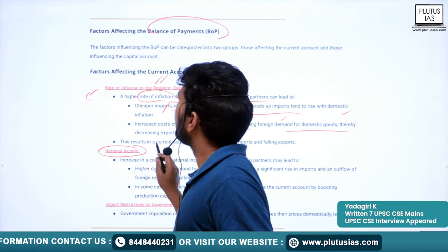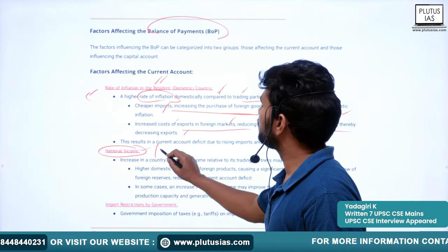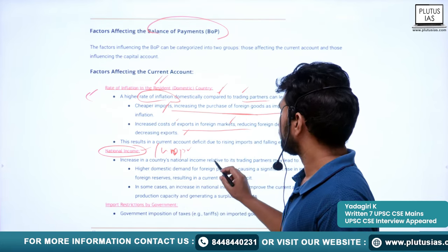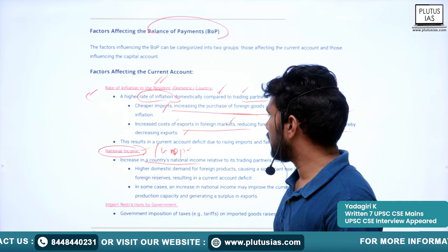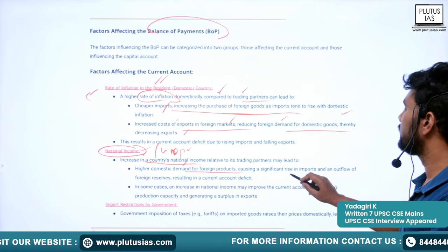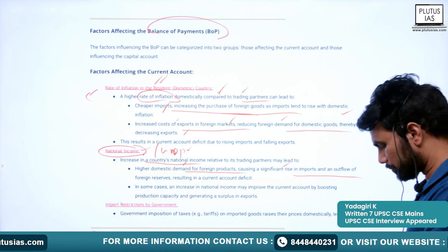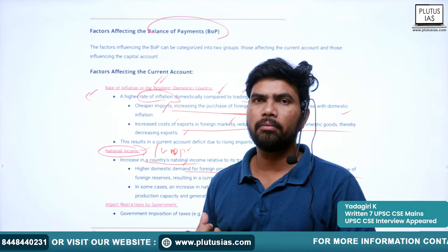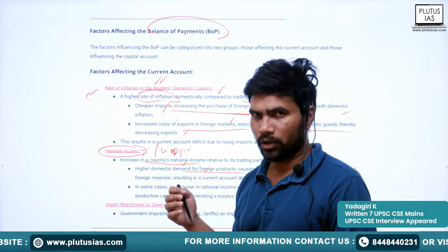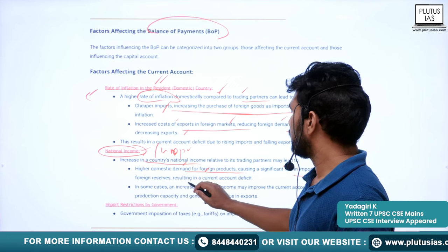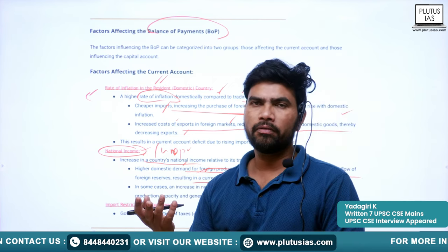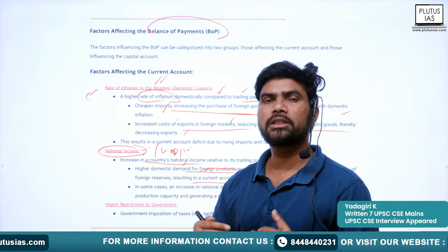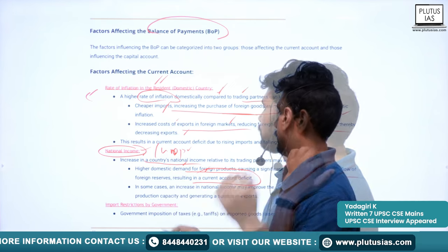Another factor impacting the current account is national income or GDP. An increase in a country's national income leads to higher domestic demand for foreign products, causing a significant rise in imports. Whenever there is a higher growth rate in GDP or national income, the disposable income with the people will also be more and there will be more demand for foreign goods. The inflow of foreign goods will be more into the country, and we have to pay more foreign exchange.